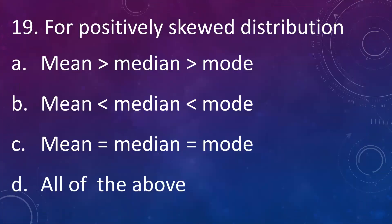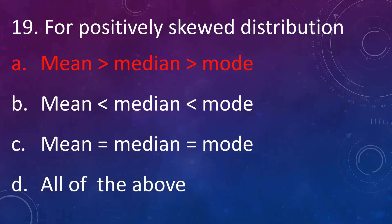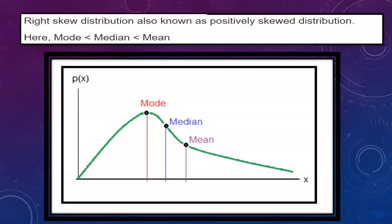For a positively skewed distribution: A: mean is greater than median greater than mode, B: mean is less than median less than mode, C: mean is equal to median equal to mode, D: all of the above. Answer is A. For a positively skewed distribution, mean is greater than median greater than mode. This is shown in the graph here.